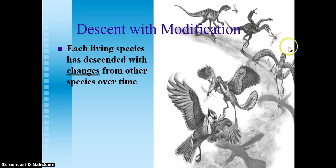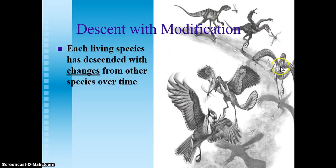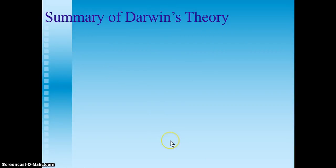we ended up with a new species — going from dinosaurs to lizard-like birds or reptile-like birds, and ultimately the birds that we see today.